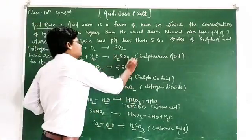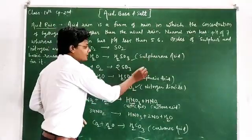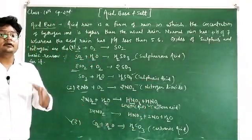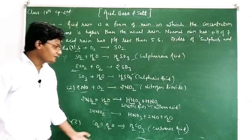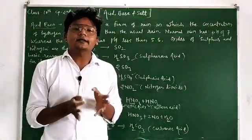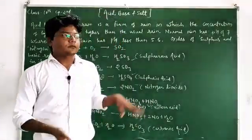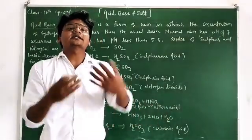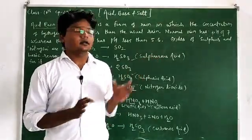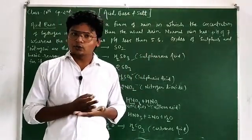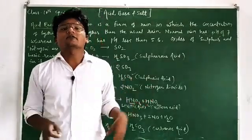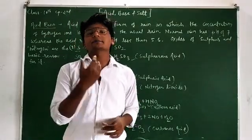So we can see that sulfurous acid, sulfuric acid, nitric acid, and nitrous acid are the basic causes of acid rain. Apart from that, carbonic acid also plays a part. Thus, acid rain occurs due to the conversion of atmospheric oxides into acids, and its harmful effects are felt by vegetation, animals, and infrastructure.